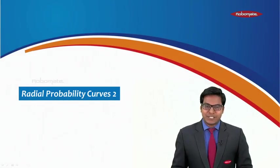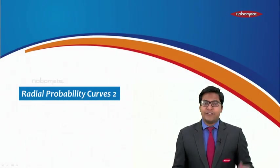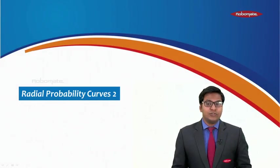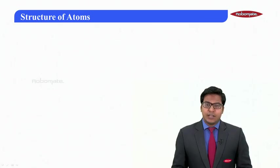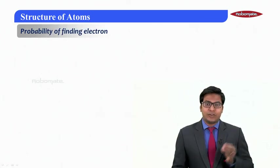Hello students, we were studying the chapter structure of atom. In this module I will continue what we were discussing, that is the radial probability curves. Earlier we discussed how to calculate the total probability.